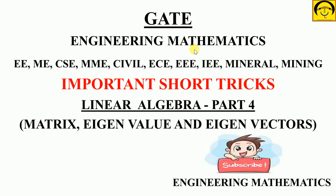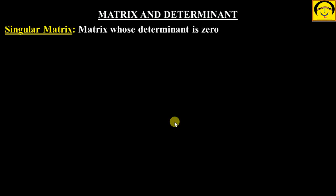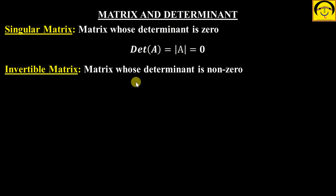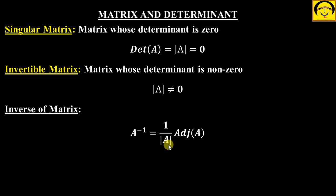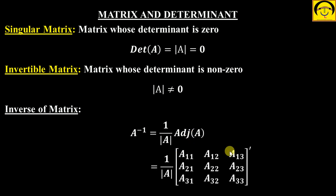Welcome to Engineering Mathematics, Linear Algebra Part 4. We are doing the 4th part; I will give you a link to Parts 1, 2, and 3 in the description box. Part 1 was the introduction, Parts 2 and 3 had solved questions. Introduction covered: singular matrix (determinant = 0), invertible matrix (inverse exists as (1/det A)·adj A), co-factors, and adjoint.